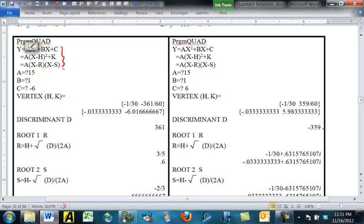It's going to remind you what all the three forms are. I call the root 1 and root 2 R and S here. It's going to ask you for A, B, and C. So, it's assuming you're starting with the general form.